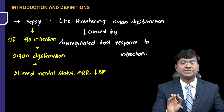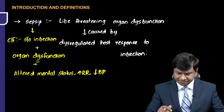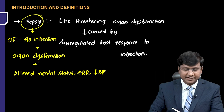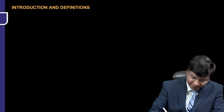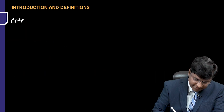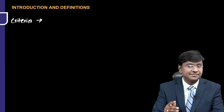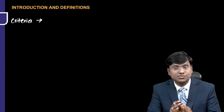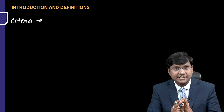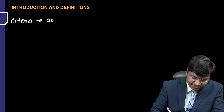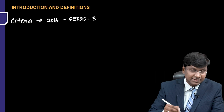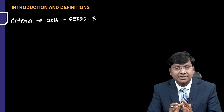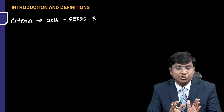The organ dysfunction can be hepatic, renal, or hematological. Those are the clinical features and examination findings in patients with sepsis. The criteria for sepsis have been released in stages: Sepsis 1 criteria in 1991, Sepsis 2 criteria in 2003, and Sepsis 3 criteria most recently in 2016.